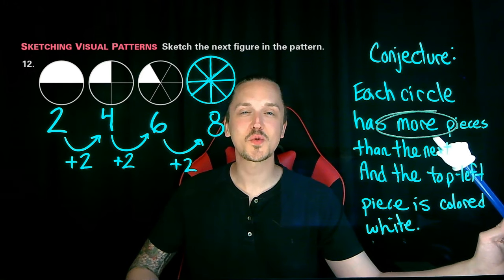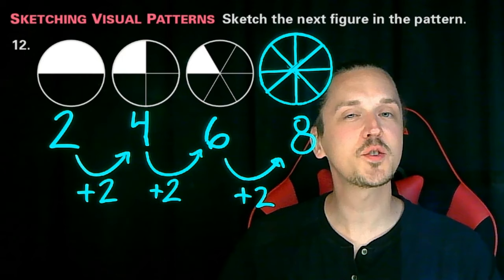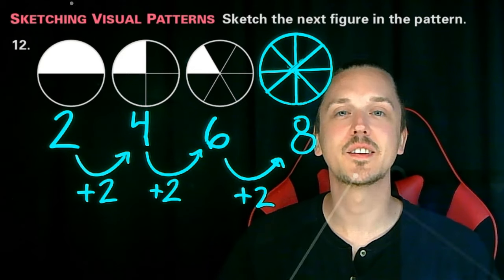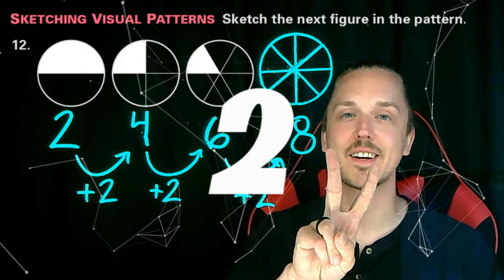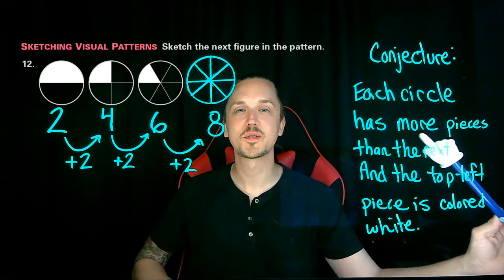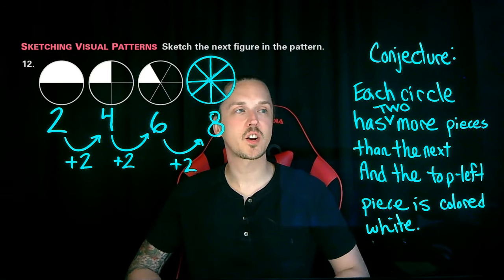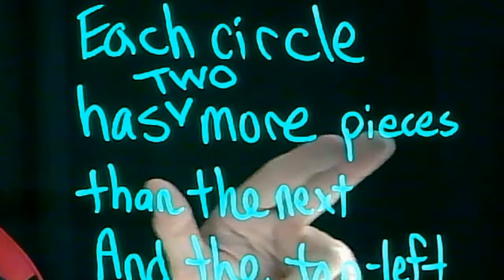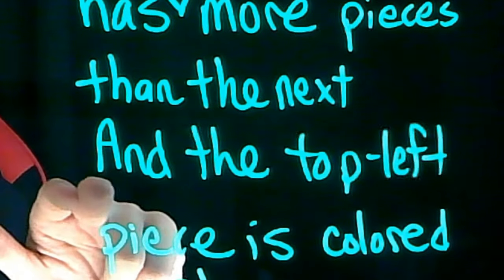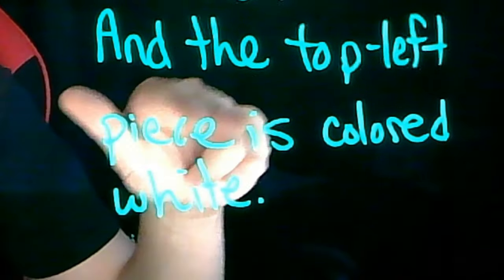That's right. We're going to make a change right here to the word more. It's not just more pieces that are added. It's two more pieces that are added each time. Let's make that change. All right. Awesome. Now let's review our conjecture. Each circle has two more pieces than the next, and the top left piece is colored white.